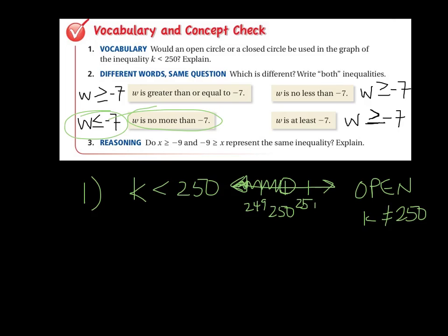Next one. Do x is greater than or equal to negative 9 and negative 9 is greater than or equal to x represent the same inequality? Well, I can already hear you guys hollering out your answers. Well, absolutely not. No, they do not. Because if you take the second one and you flip it around, use that kind of symmetric property, and there is a symmetric property of inequalities, you can see that it indeed is not the same thing as x is greater than or equal to negative 9.